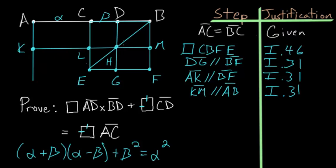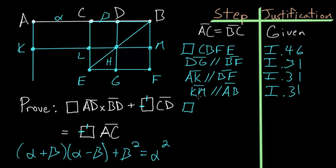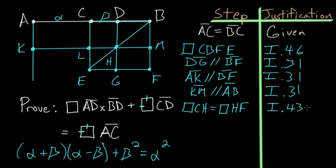Now let's look at the square CBFE we drew. It has a diameter across it, and in any parallelogram with a diameter, the two parallelograms on either side of the diameter — known as the complements — are always equal to each other. So parallelogram CH equals parallelogram HF, by Book 1 Proposition 43.